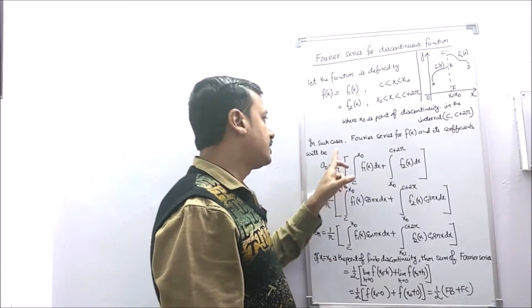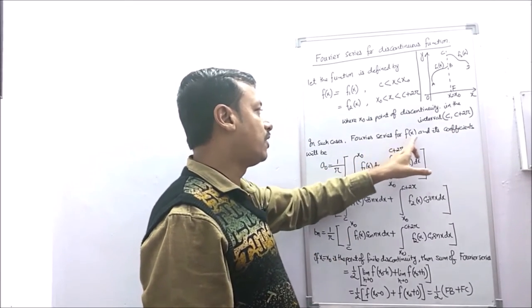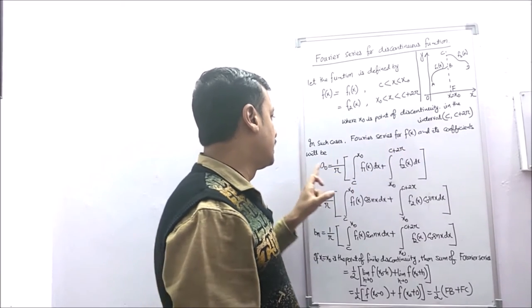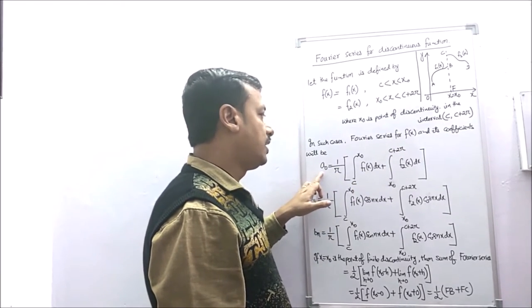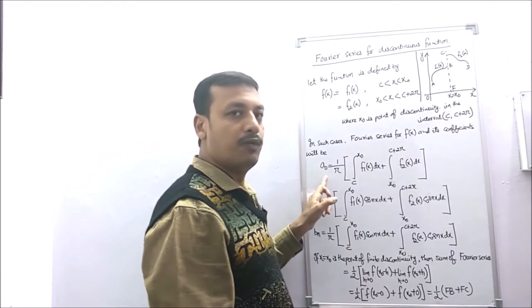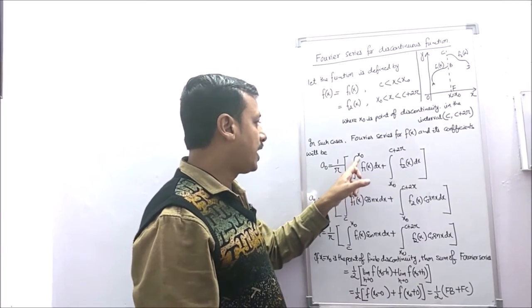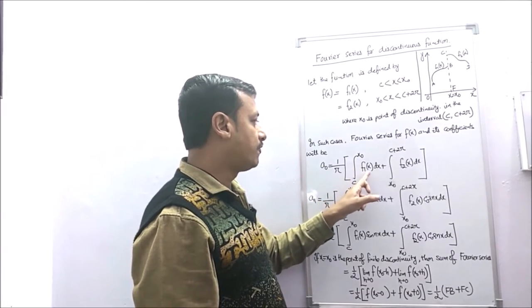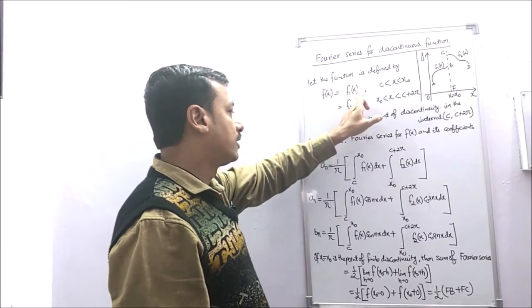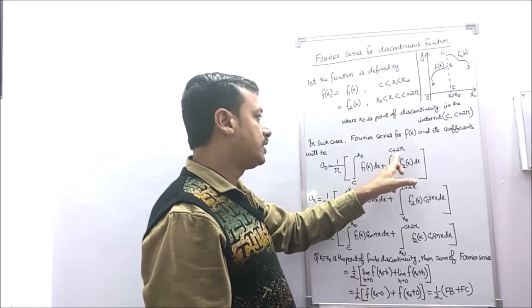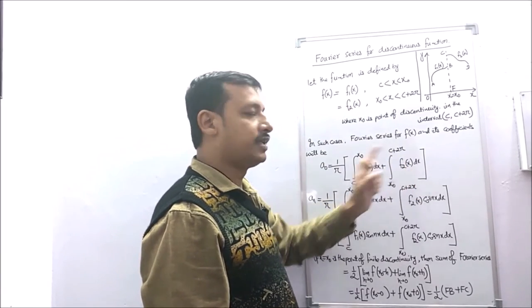In such cases, the Fourier coefficient a0 is given by: a0 = (1/π) [∫ from c to x0 of f1(x) dx + ∫ from x0 to c+2π of f2(x) dx].